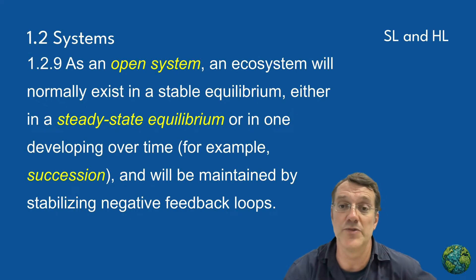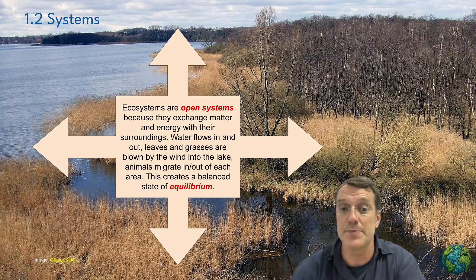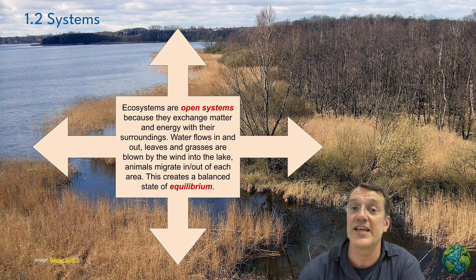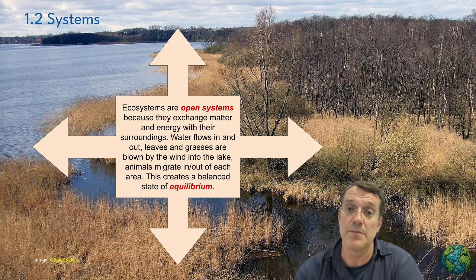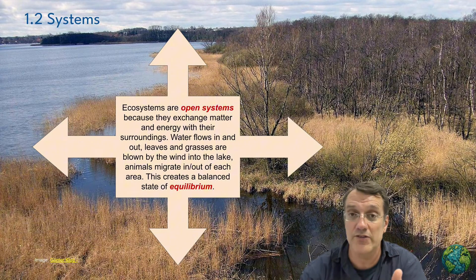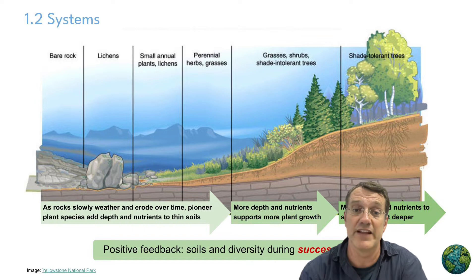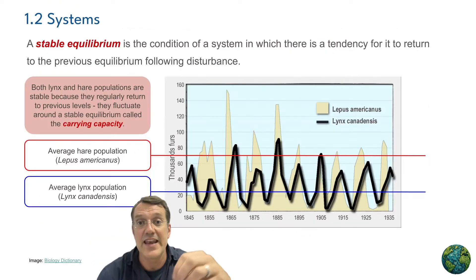Ecosystems, as open systems, exchange matter and energy with their surroundings. Ecosystems typically exist in a state of stable equilibrium. This equilibrium can be a steady state where inputs and outputs are constantly balanced, or it can develop over time through processes like ecological succession.